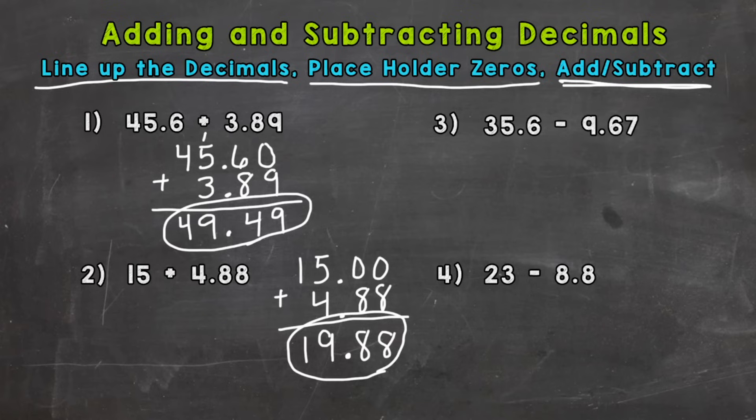So number 3, we have subtraction, which is the exact same rules except when you get to this third step you subtract. So let's write out our problem lining up the decimals, and it's subtraction.